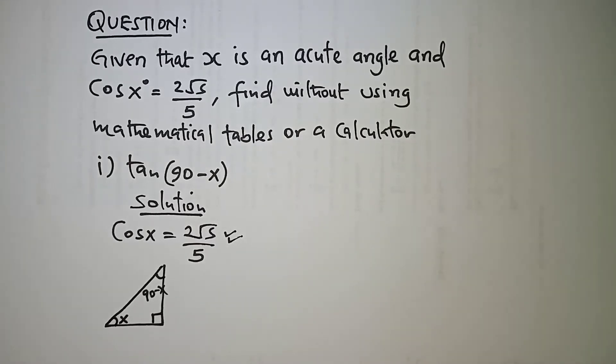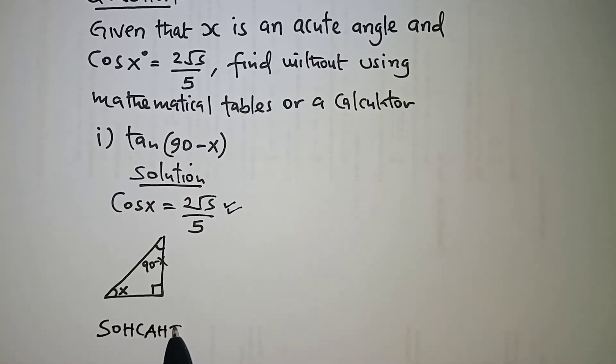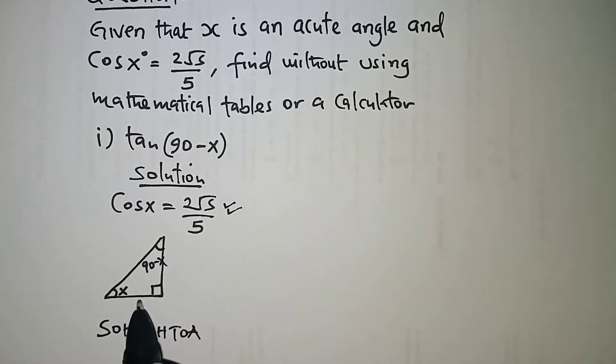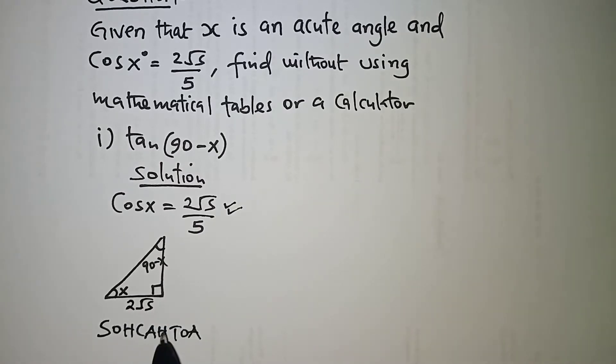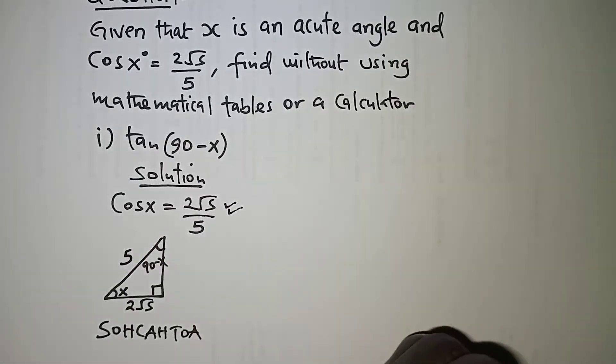So we will bring in the concept of SOHCAHTOA where when we talk about cosine it simply means adjacent over hypotenuse. So cosine of x will be adjacent which is root 5 over the hypotenuse which is 5 from this equation here.